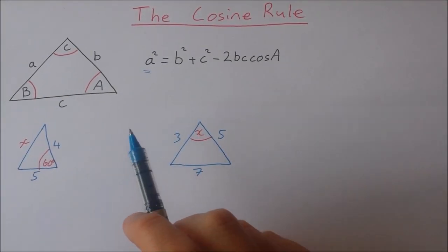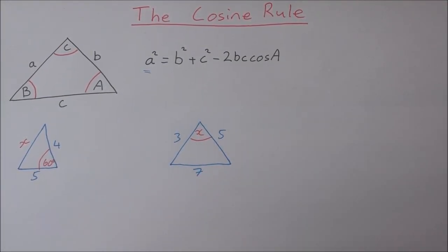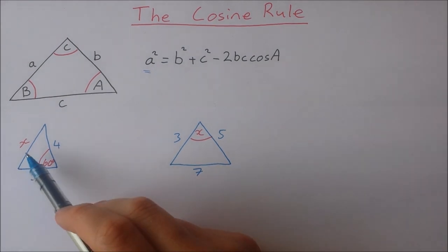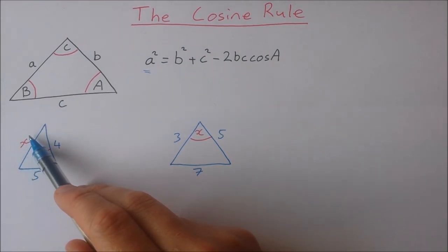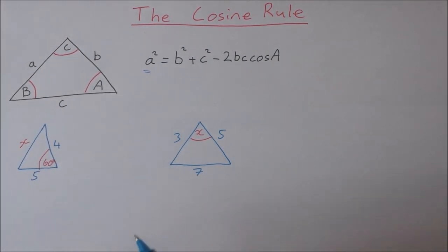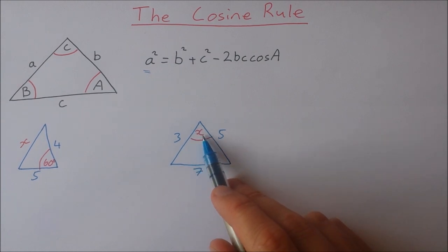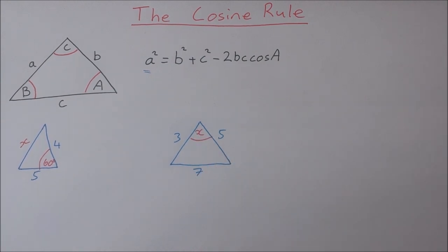Okay, in this video we're going to take a look at the cosine rule and I'm going to show you a couple of examples. The first one is how to solve for an unknown side using the cosine rule, and the second one is how to solve for an unknown angle using the cosine rule.